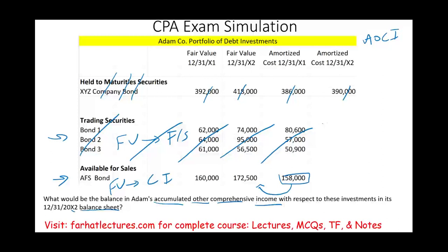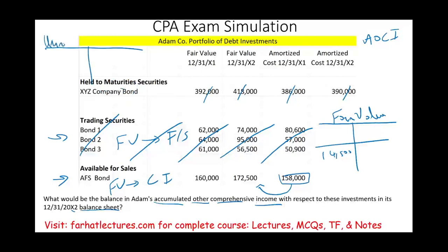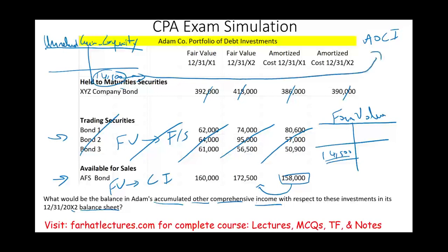The entry we make — the cumulative entry — is a fair value adjustment. We debit a fair value account for 14,500, and the corresponding credit is an account called unrealized gain, which is an equity account. That unrealized gain is then closed to accumulated other comprehensive income. Therefore, the balance in accumulated other comprehensive income would be 14,500. To clarify: AOCI for year X1 was 2,000, so the adjustment between year one and year two was 12,500, and 12,500 plus the previous 2,000 gives us 14,500. We are being asked for the ending balance, which is 14,500.